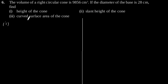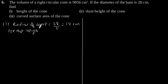So let's write what is given in the question. Radius of cone is equal to 28 divided by 2 is equal to 14 cm. Let the height of the cone be H.